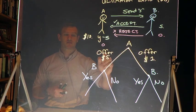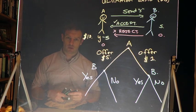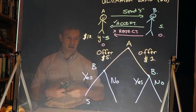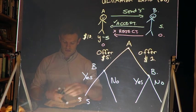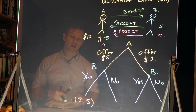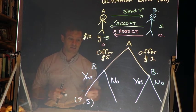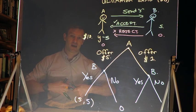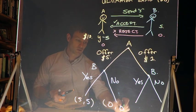So A makes an offer of five dollars, B says yes, then how much money does each of them end up with? B will get five dollars. A gets ten minus five equal to five dollars. So we're seeing there that each player is going to get five dollars. In the case where B says no, and rejects A's offer, then B gets zero dollars, A gets zero dollars. So that's the case of rejection. Zero, zero.